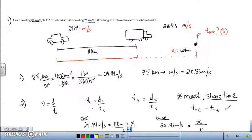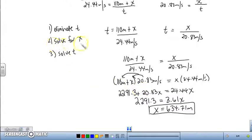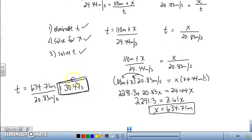So what did we just solve for? This is not the answer to the problem. But what we did find is how far the truck went. Now that we have x, we could pick one of these equations to solve for t. Let's pick the easiest one. Time is equal to x, which we have is 634.71 meters, divided by 20.83. When I do that, I get the total time, and the answer to the problem is 30.47 seconds. So that's the answer. That's how long it takes for the car to catch up to meet each other.